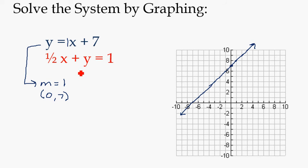So to put this in slope-intercept form, I'm just going to minus 1 half x from both sides. So that's going to give me y equals negative 1 half x plus 1. So my slope is negative 1 half and my y-intercept is 0, 1. So I'm going to start at 0, 1. And I'm going to go down 1 over 2, down 1 over 2, down 1 over 2. And I can also go up 1, left 2, up 1, left 2.